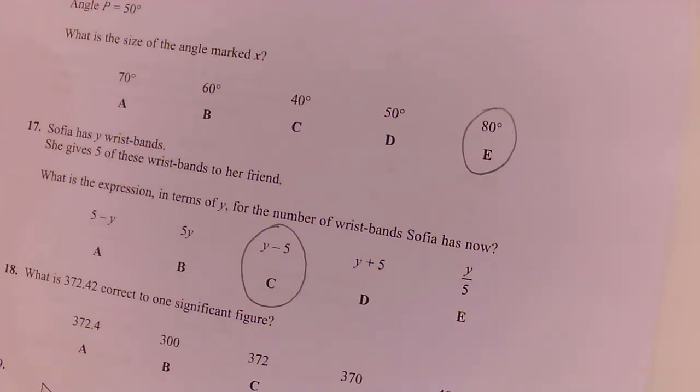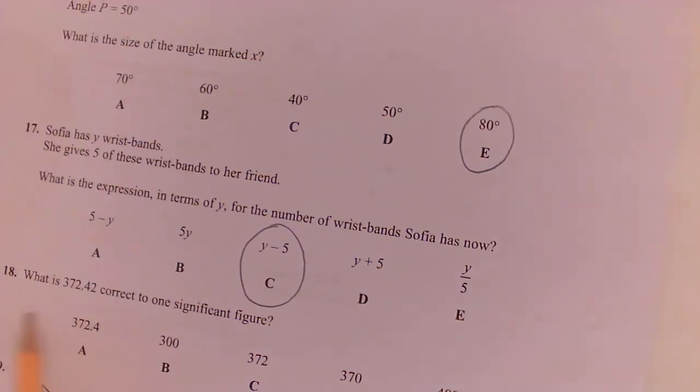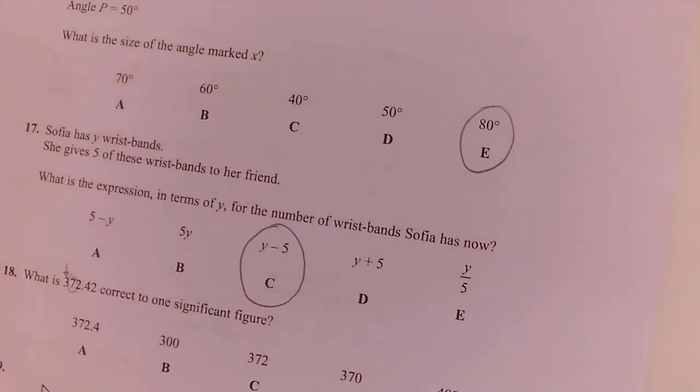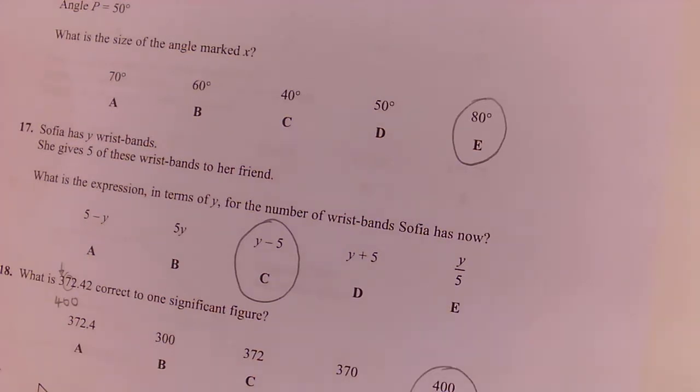Question 18. What is 372.42 correct to one significant figure? So we stop at the first most important significant figure. We look at the next and we decide. So stop, look, decide. Seven rounds up. So that is going to be 400, which is E.